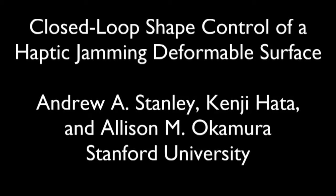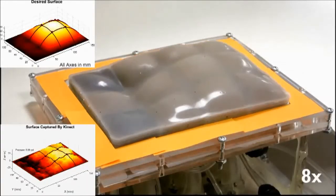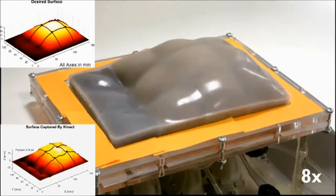A haptic jamming tactile display consists of an array of thin particle jamming cells. It can change its shape and mechanical properties simultaneously through a combination of vacuuming individual cells, pressurizing the air chamber beneath the surface, and pinning the nodes between the cells at various heights.